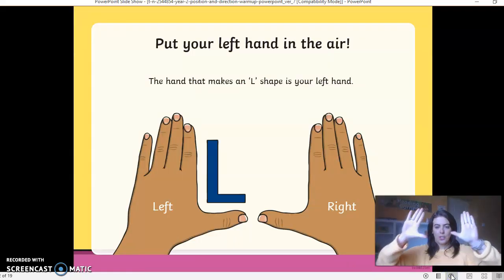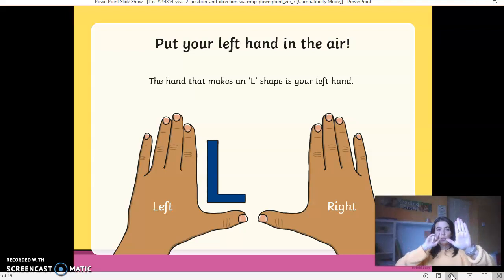Now, if you put your two hands up in the air, you can see that the hand that makes an L shape from your eyes is the left hand. So have a look and see, I can see that makes an L shape here between my finger and my thumb. That is a capital L. So this is my left hand.